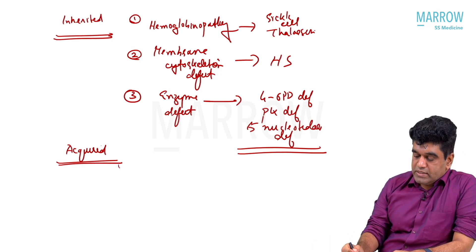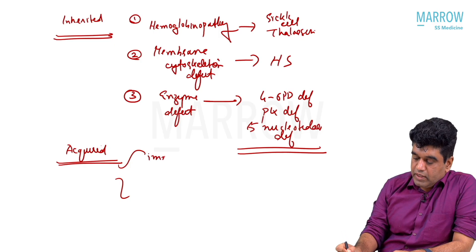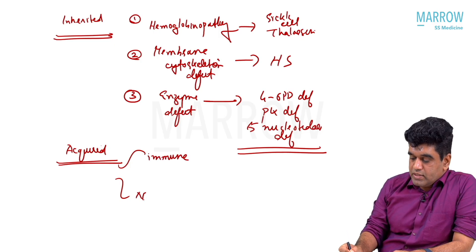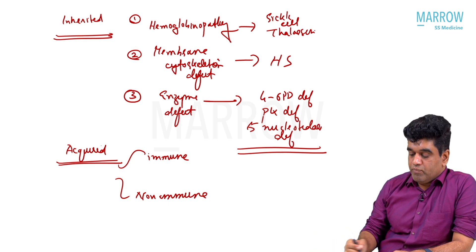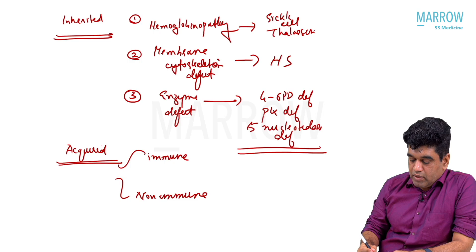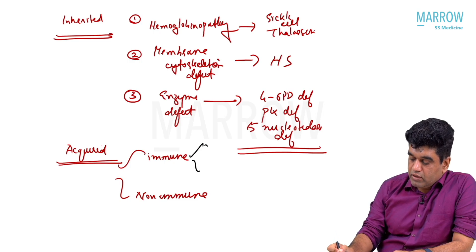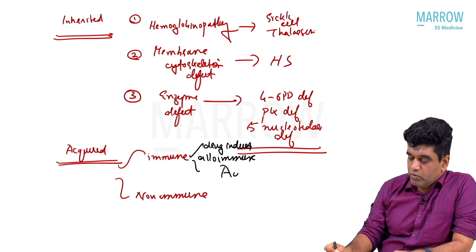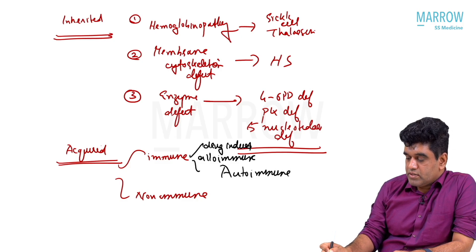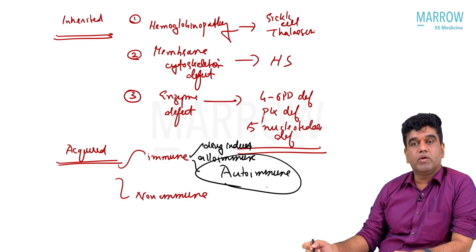Acquired causes can be divided into immune hemolytic anemia and non-immune hemolytic anemia. Under immune hemolytic anemia, we have drug-induced hemolysis, alloimmune hemolysis, and most importantly, autoimmune hemolytic anemia. Under autoimmune hemolytic anemia, we have warm autoimmune antibody hemolytic anemia, cold antibody autoimmune hemolytic anemia, and paroxysmal cold hemoglobinuria.